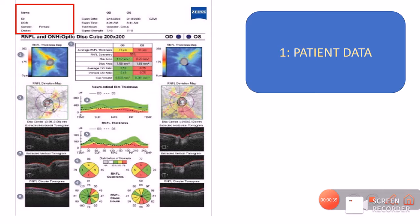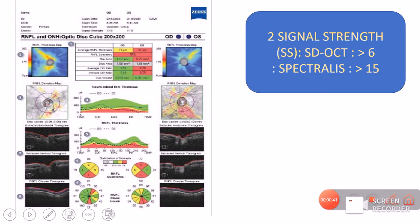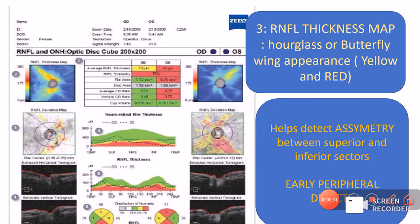The next parameter to consider is the signal strength, given by the manufacturer and important for assessing image quality. We only proceed with reading the OCT printout if the image quality is good. The signal strength for Cirrus SD-OCT should be more than 6, for Spectralis more than 15, and for Avanti more than 30. Signal strength should always be assessed before reading the printout.